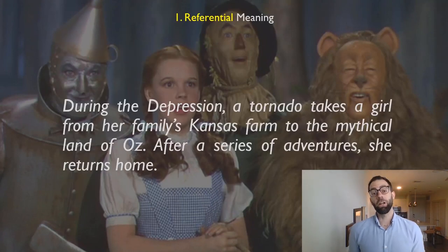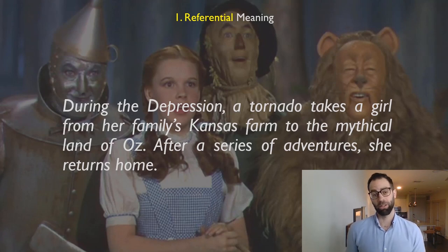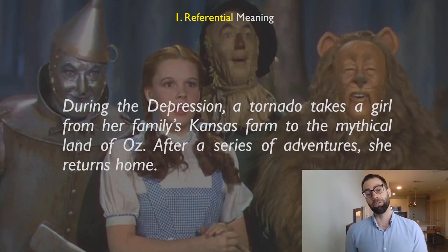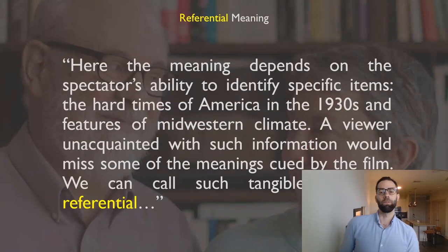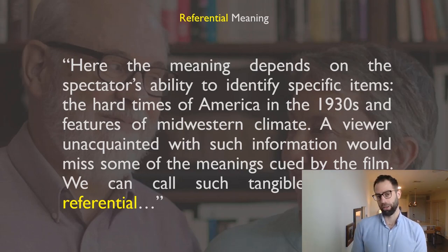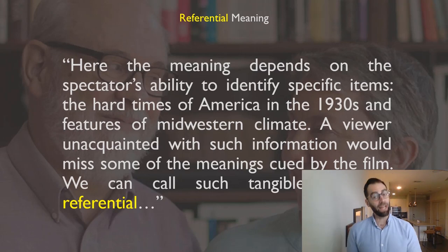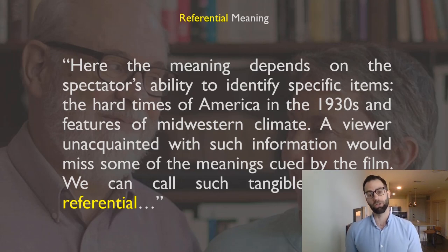The first one is referential. Bordwell and Thompson use The Wizard of Oz to exemplify each category. An example of referential meaning: 'During the Depression, a tornado takes a girl from her family's Kansas farm to the mythical land of Oz. After a series of adventures, she returns home.' This is more or less a plot synopsis. The meaning depends on the spectator's ability to identify specific items — the hard times of America in the 1930s and features of Midwestern climate. We can call such tangible meanings referential.